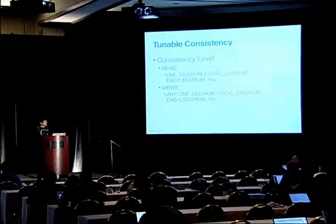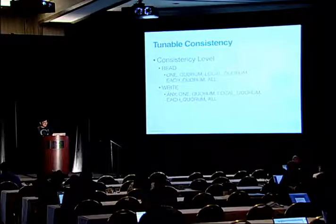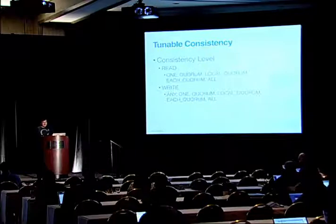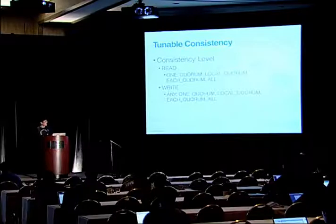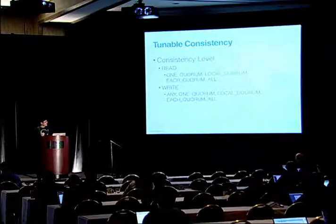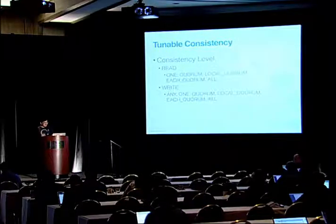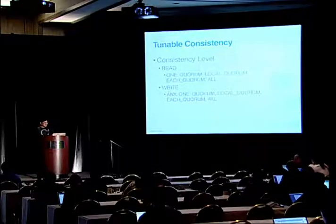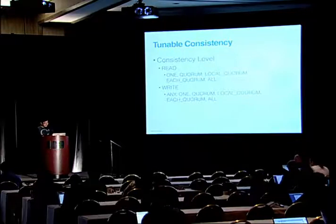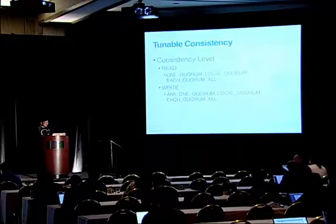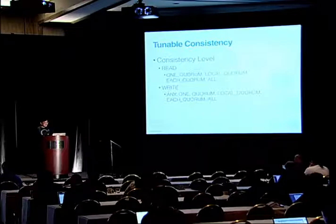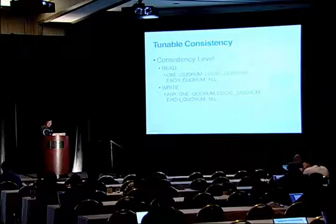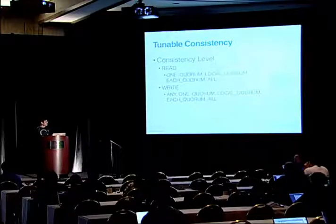Now you know how Cassandra stores data across the cluster. But do you have to query all replicas, or write all replicas at once? The answer is no. This is where tunable consistency comes in. You can choose to write just one replica and Cassandra can acknowledge that write, or you can tell Cassandra to do three synchronous writes by using consistency level ALL. There are various kinds of consistency levels you can choose for reading and writing data, so you can tune Cassandra's performance based on your application's needs.